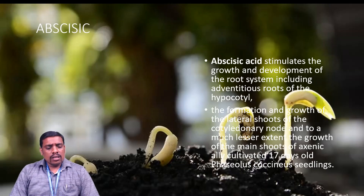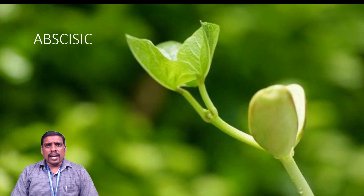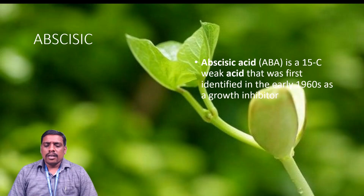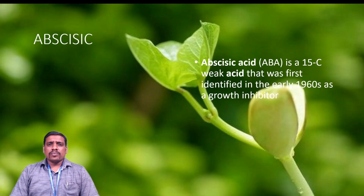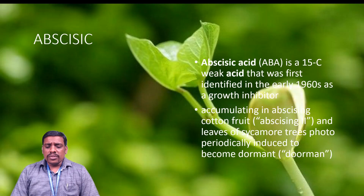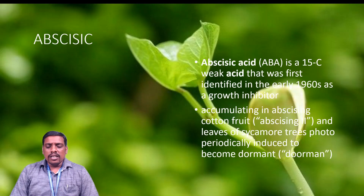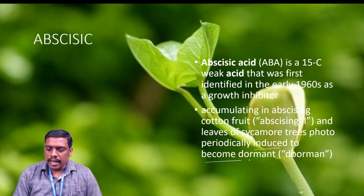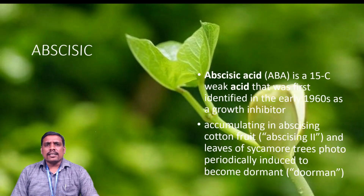Abscisic acid is a 15-carbon weak acid that was first identified in the 1960s as a growth inhibitor by some scientists. Accumulation of abscisic acid in cotton fruits or cotton buds and leaves of sycamore trees photoperiodically induces them to become dormant. So to induce dormancy in some plants like sycamore and also in cotton fruit, abscisic acid plays an important role.